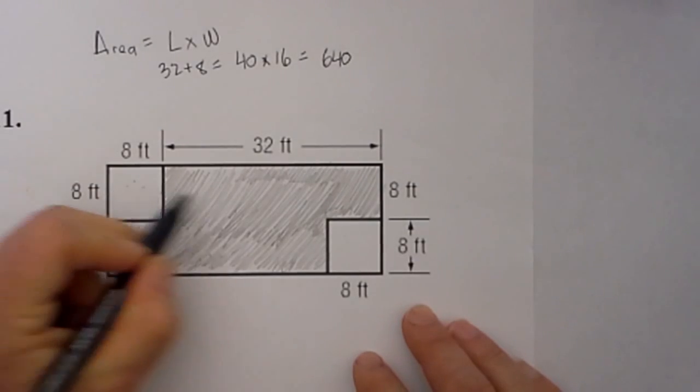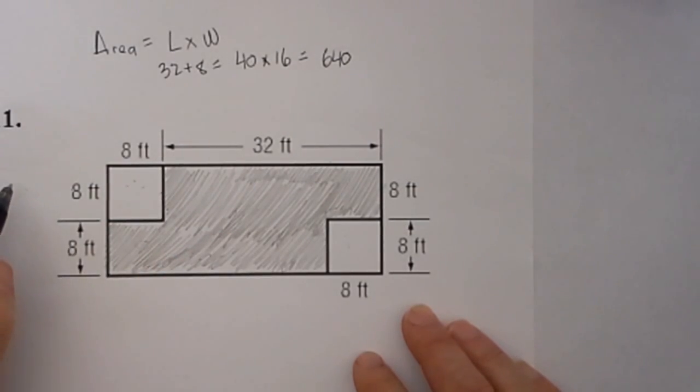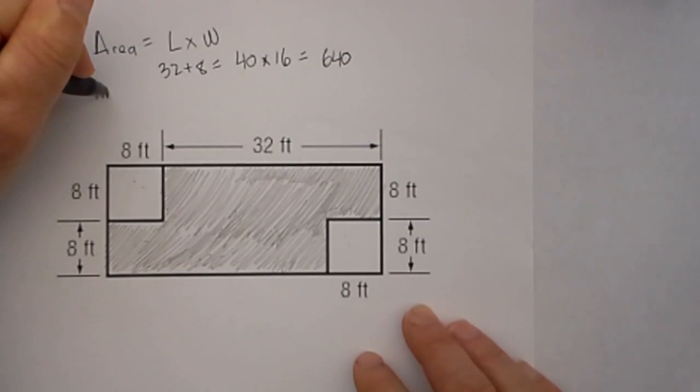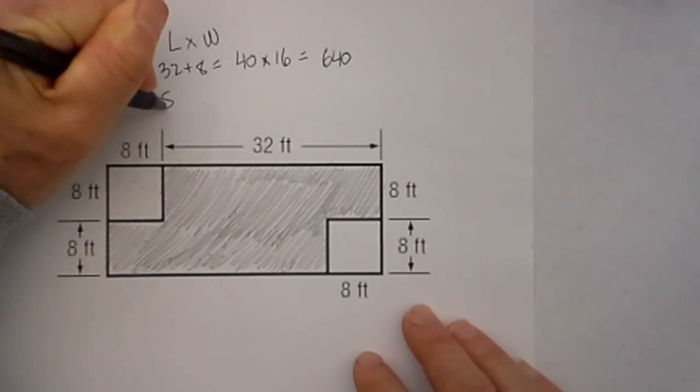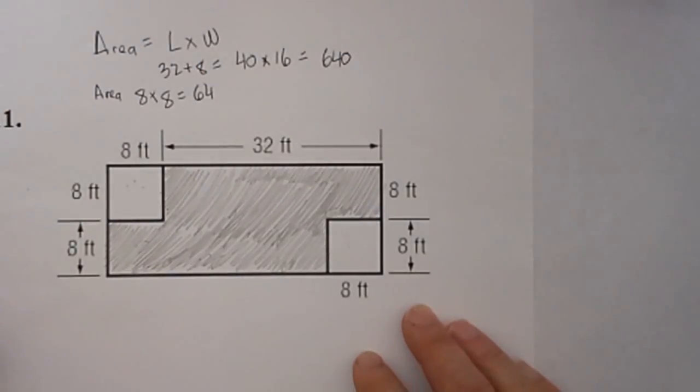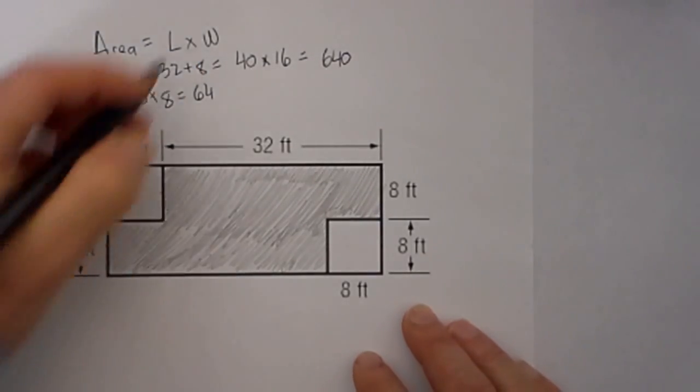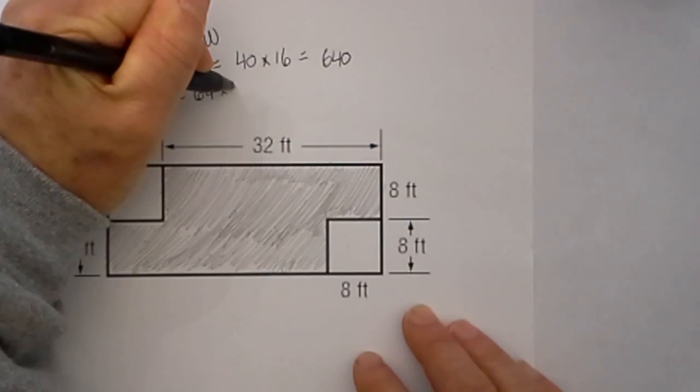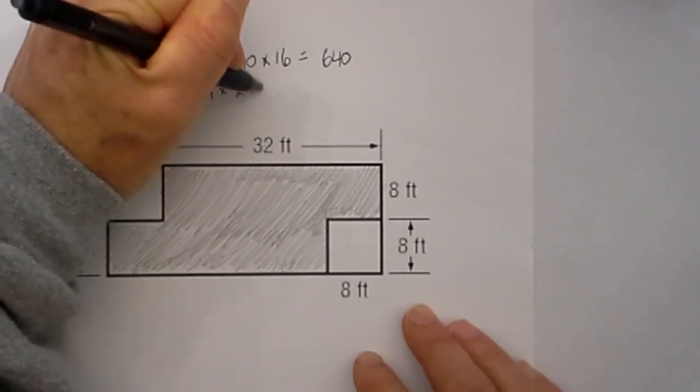But now we need to subtract out these two areas. So the area of another square or rectangle will be 8 times 8, which is equal to 64. And we have two of these, so we multiply 64 times 2, which equals 128.